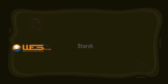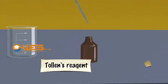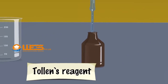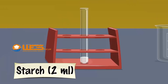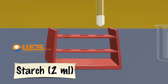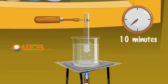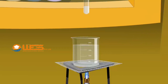Starch. Take 2 ml of Tollens reagent using a dropper. Add it into a test tube containing 2 ml suspension of starch. Remove the test tube from the rack using a test tube holder. Place it in a boiling water bath and heat for 10 minutes. There will be no characteristic change, indicating the absence of reducing carbohydrate.